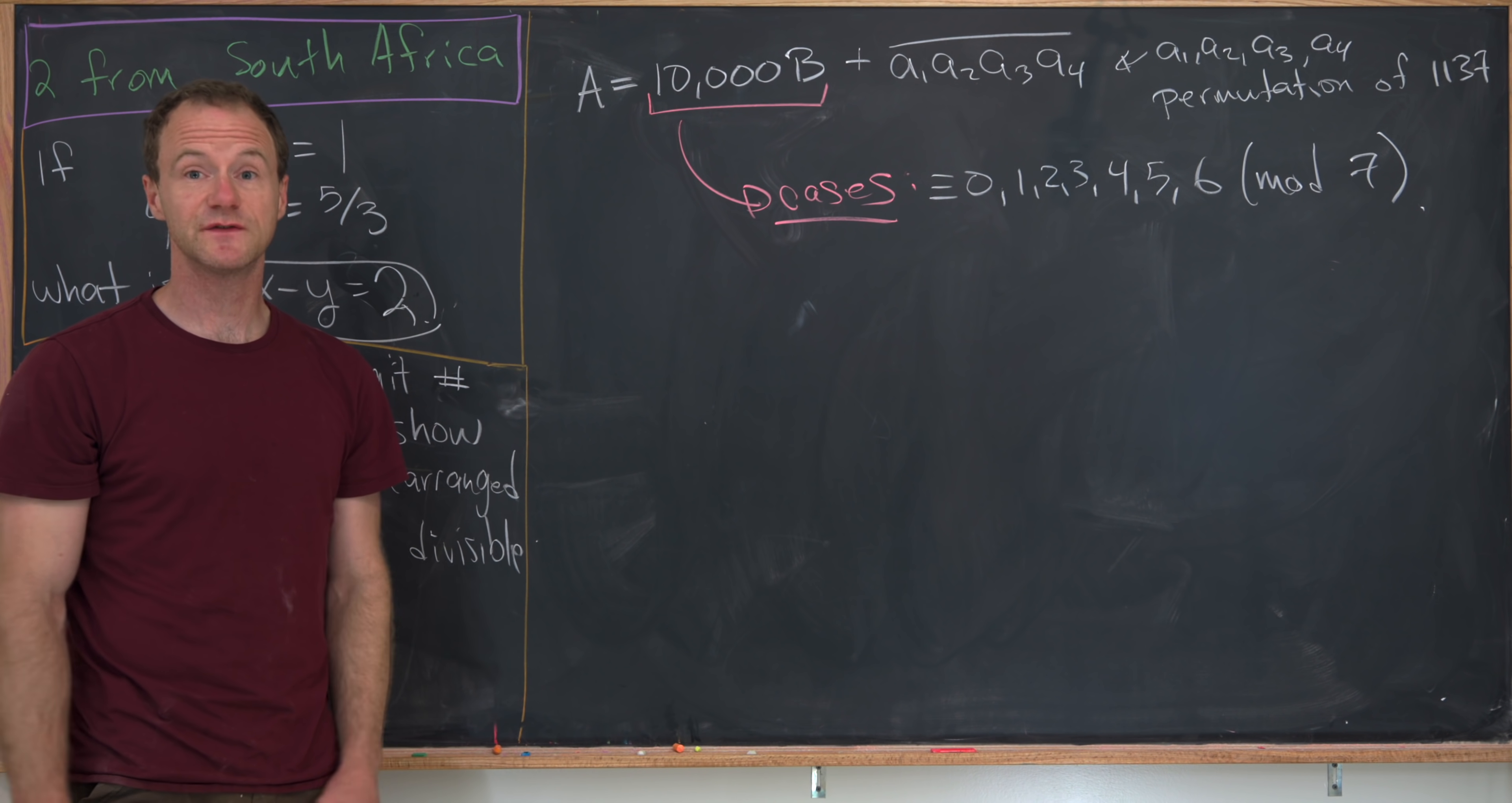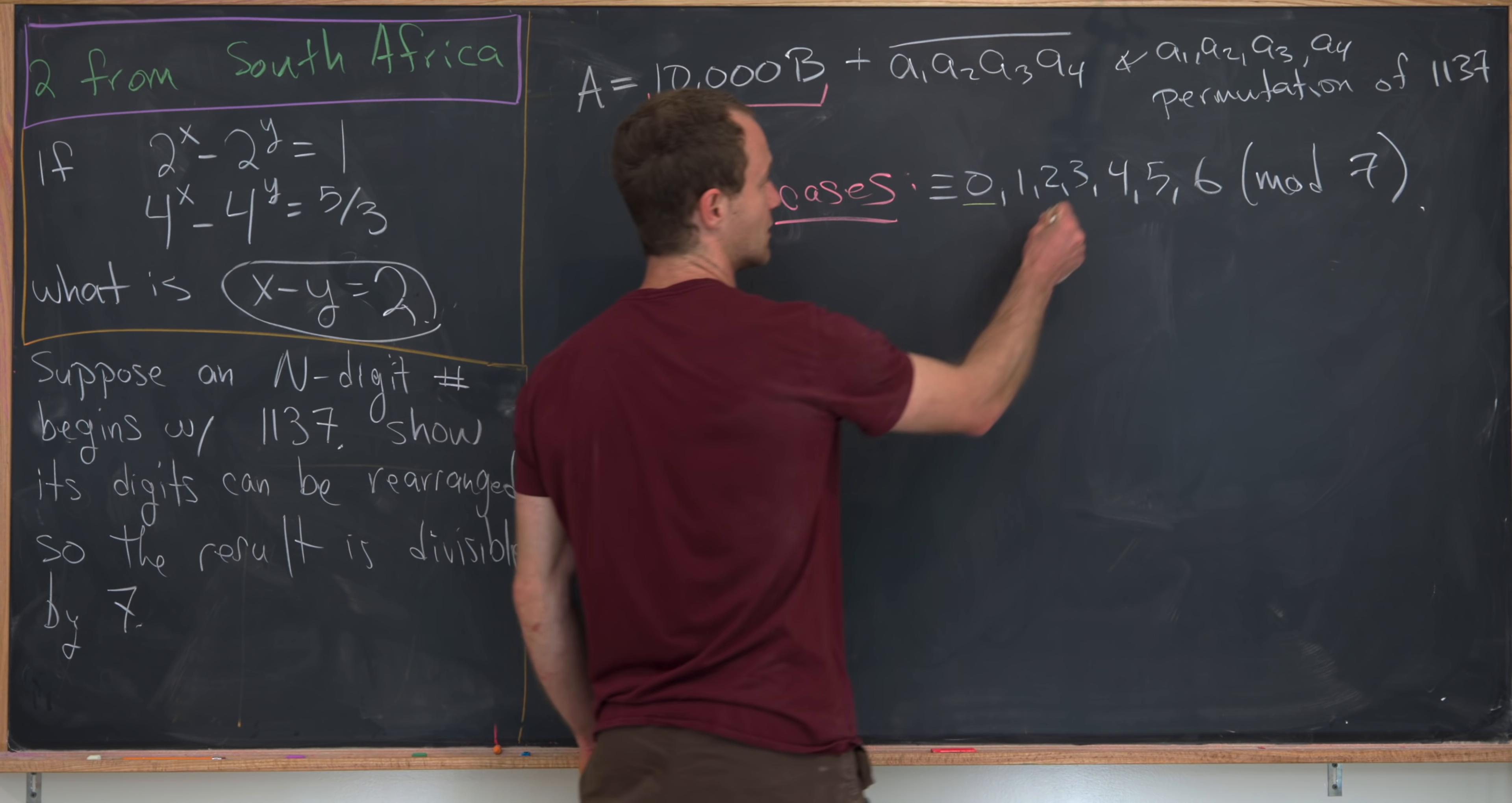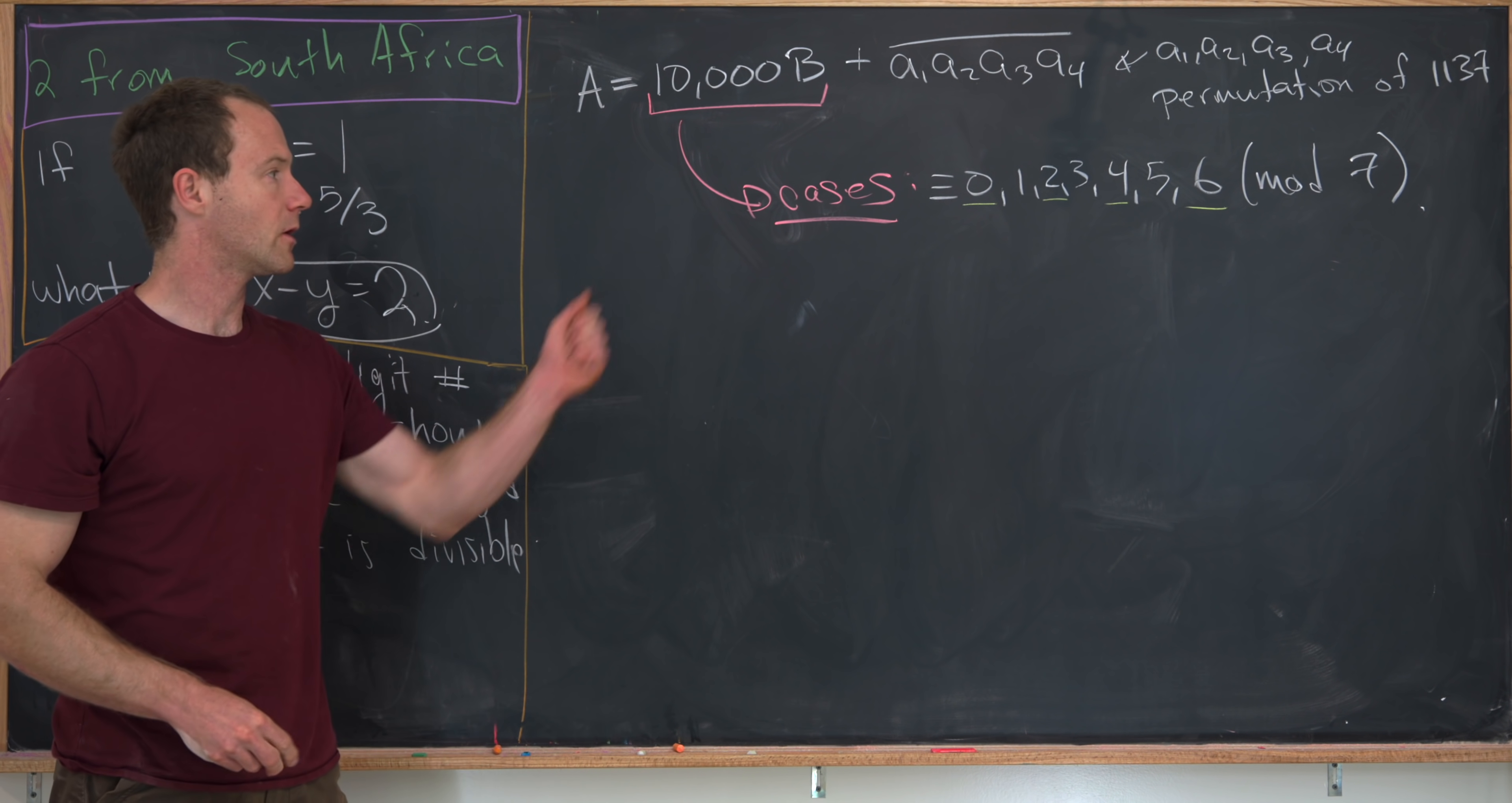Okay, so now we'll look at each of these cases individually. And in fact, we'll only look at the even cases. So when we have 0, 2, 4, or 6, and I'll leave those odd cases for homework.